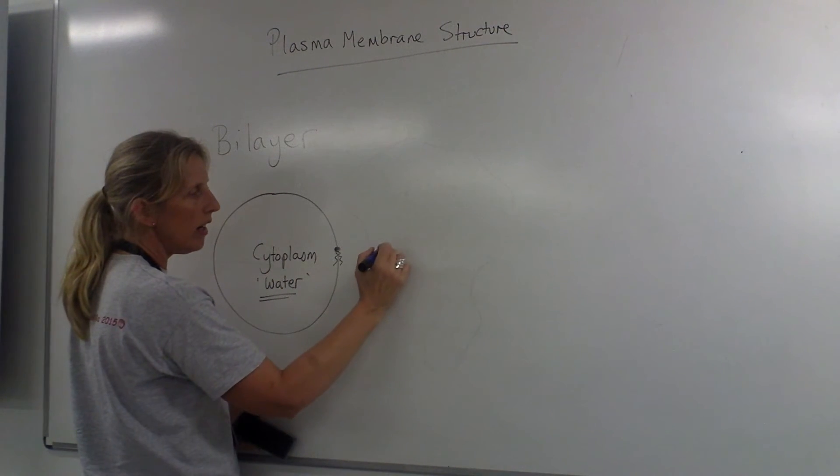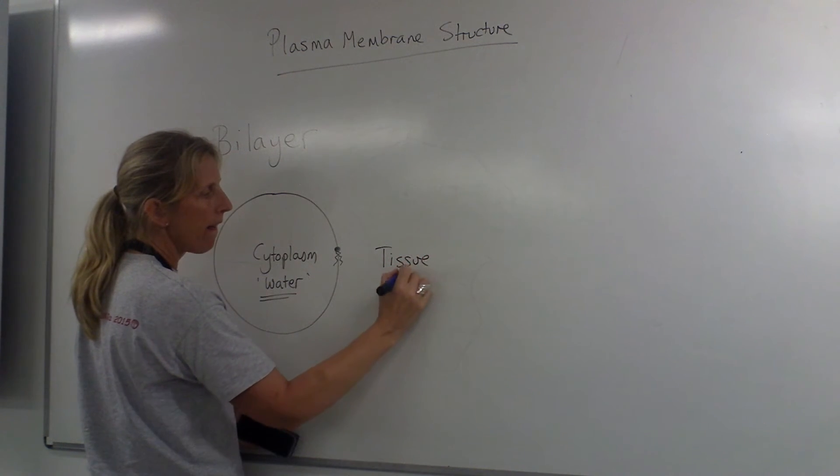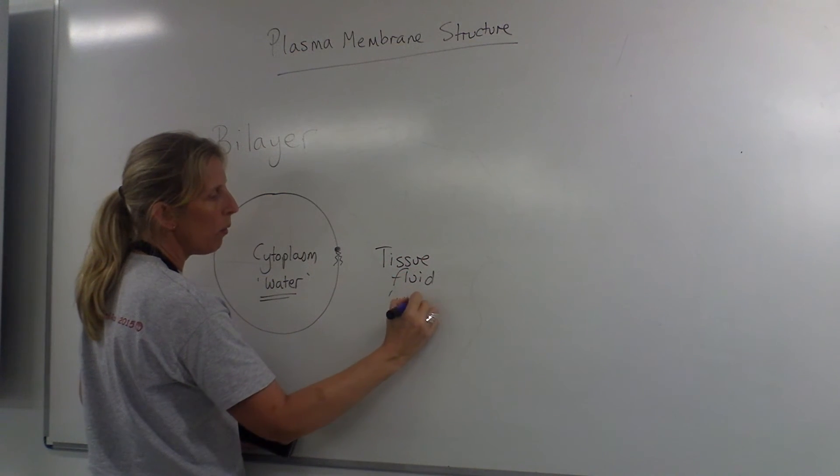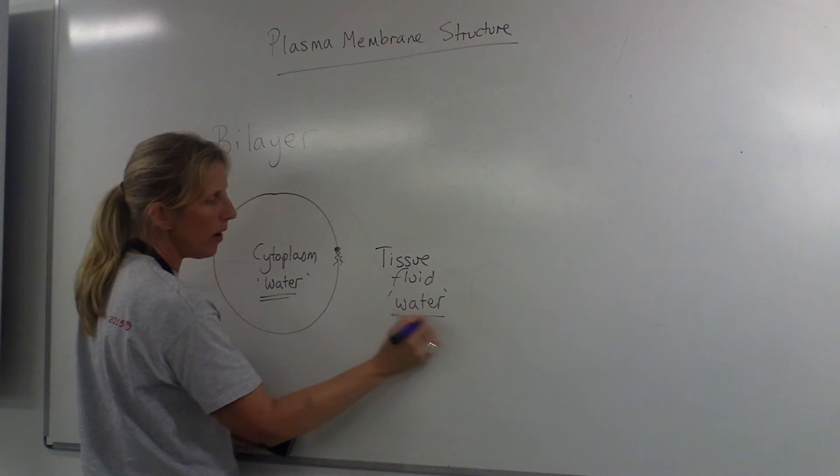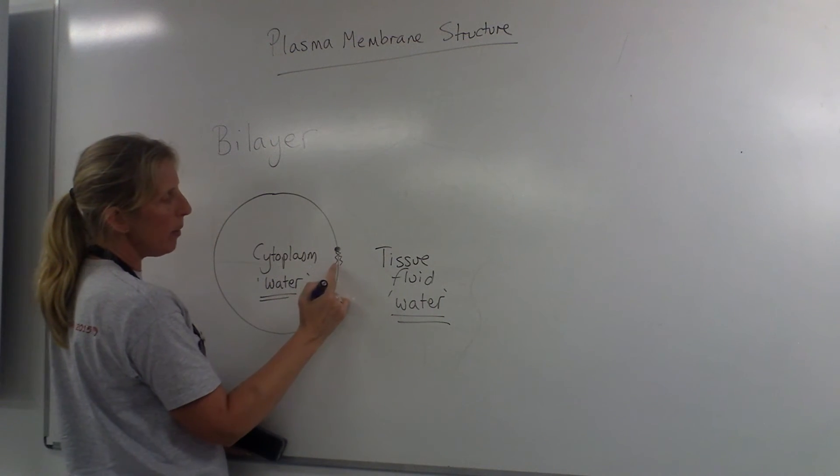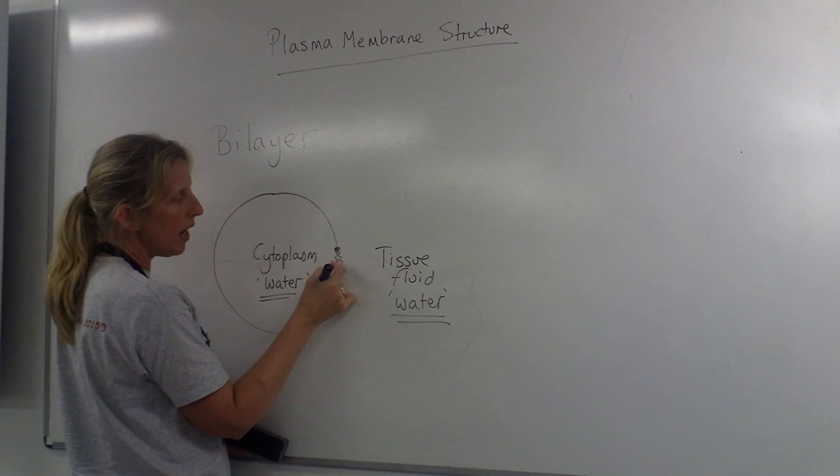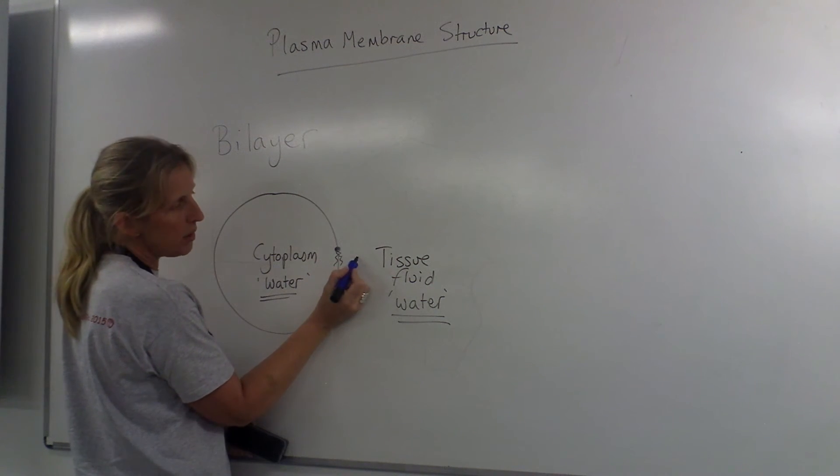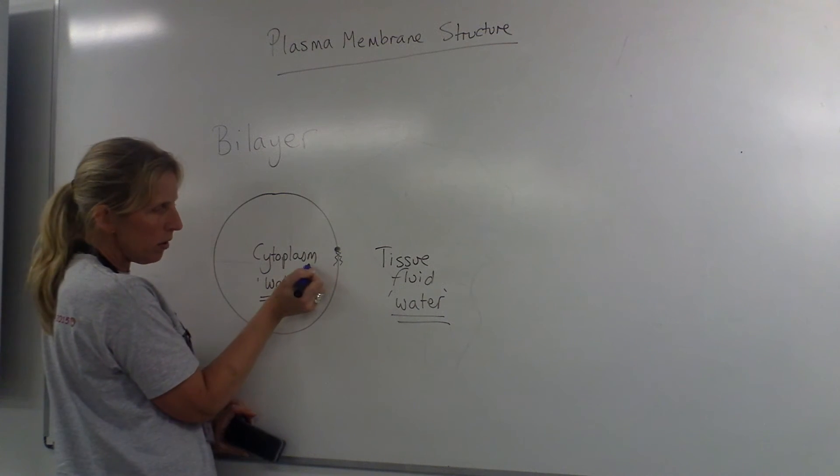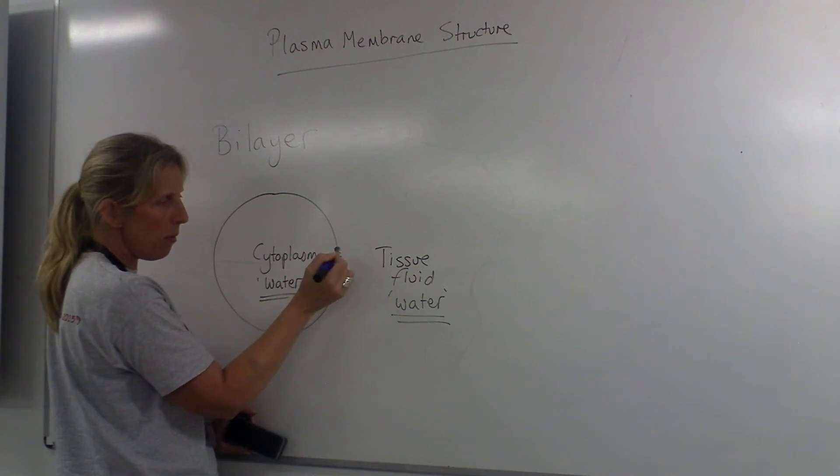Outside the cell is a watery environment, which is called tissue fluid, which is water as well, or watery. So the phospholipid, which way would it position itself? The tails would try to point outwards, oh, there's water, so they'd be repelled. They'd try to point inwards, there's water, they'd be repelled.